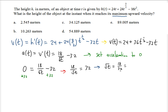Notice that 18 divided by 32 reduces — the GCF of 18 and 32 is 2 — so √t = 9/16. Squaring both sides gives t = 81/256. So at 81/256 seconds, the object reaches its maximum upward velocity.